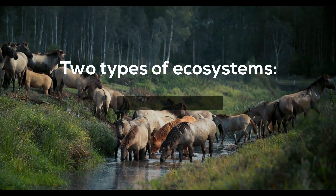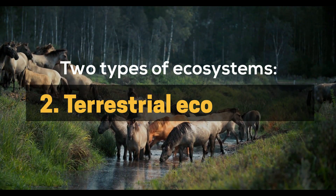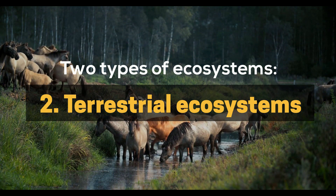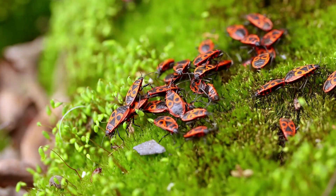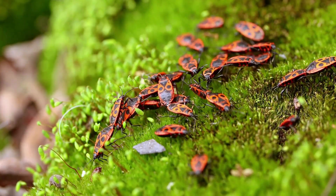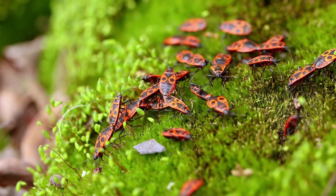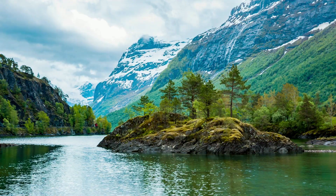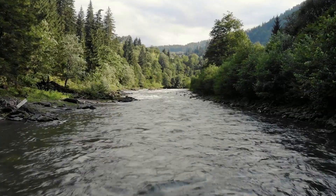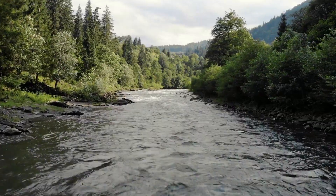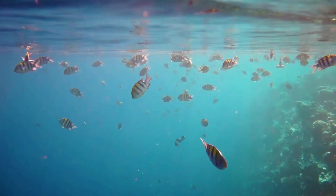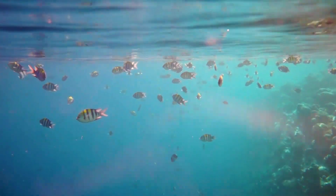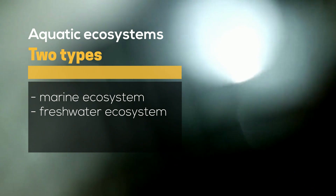Aquatic ecosystems and terrestrial ecosystems. While a terrestrial ecosystem is a community of land-based organisms that interact in a certain area, an aquatic ecosystem exists only in water bodies such as lakes, rivers, oceans, and streams. These aquatic ecosystems are generally divided into two types: the marine ecosystem and the freshwater ecosystem.